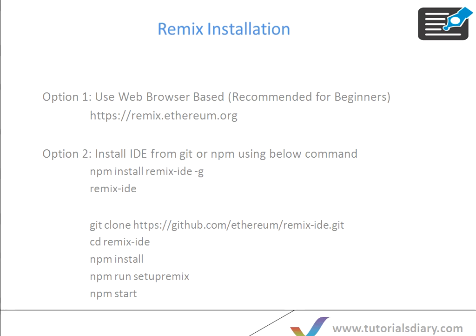The other option is to install the IDE using npm or git. npm is a Node Package Manager. For npm, you use the command 'npm install remixide -g', and then to open the IDE you use 'remix-ide'. If you go with the git option, you clone the files using 'git clone https://github.com/ethereum/remix-ide.git', then navigate to that remix-ide folder.